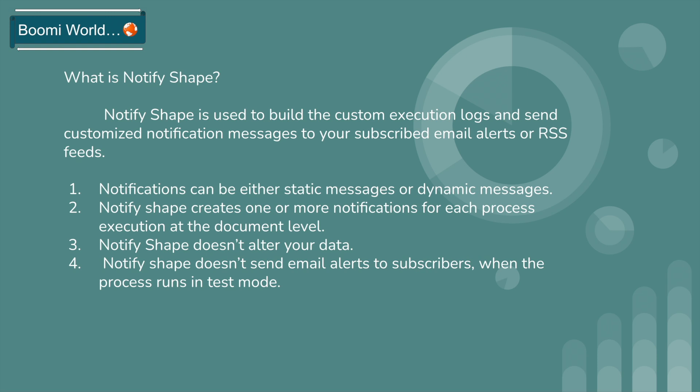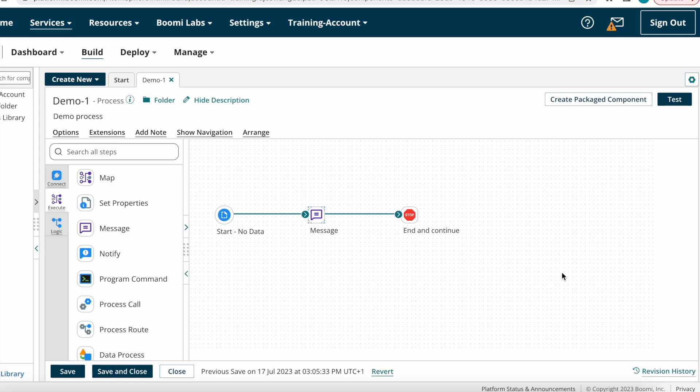However you got data from the previous shape, the same data Notify Shape passes to the next shape — it does not alter any data. Also, Notify Shape does not send email alerts to subscribers when the process runs in test mode.